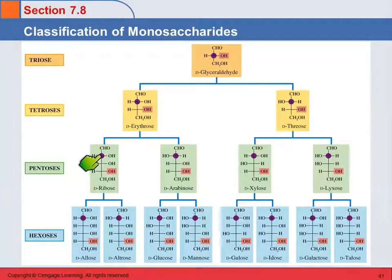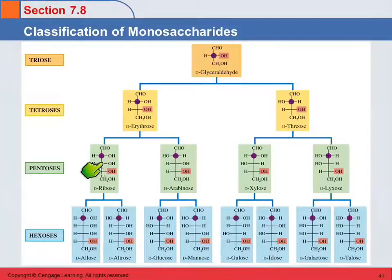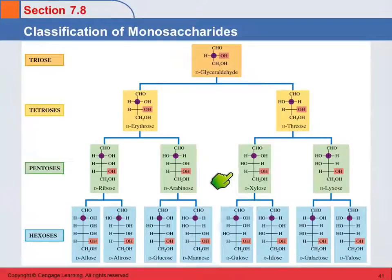For the hexoses, we've got two chiral carbons besides the one at the bottom. The top one could be right or left, and the middle one could be right or left. So here they're both right, here they're both left, and then right and left — you get the idea. Just lots and lots of combinations.